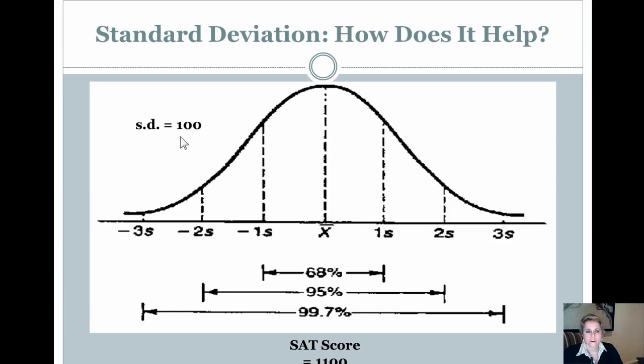That means if you collected data on SAT scores, which I believe are subject to normal distribution, you would find that two times 100, negative 200, meaning 95% of all SAT scores would fall between 900 and 1300. Then you can broaden it even more to get 99.7% of all data between negative three standard deviations and positive three standard deviations. This means that 99.7% of all SAT scores fall between 800 and 1400.